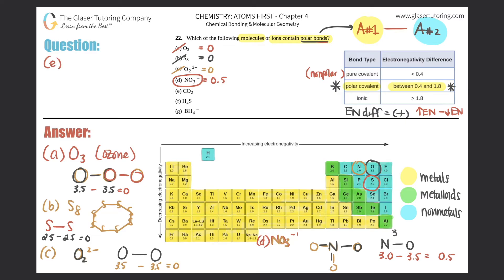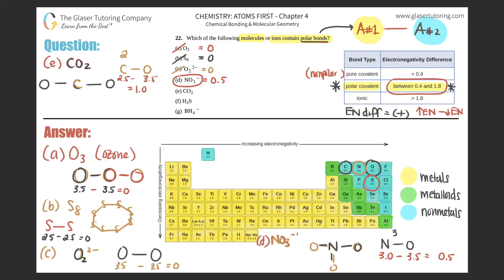Part E is CO₂. Carbon's electronegativity is 2.5 and oxygen's is 3.5, so carbon goes in the middle with two C–O bonds. Subtracting the electronegativities: 3.5 minus 2.5 gives a difference of 1.0, which is between 0.4 and 1.8. So CO₂ does contain polar bonds, and E is also part of the answer.